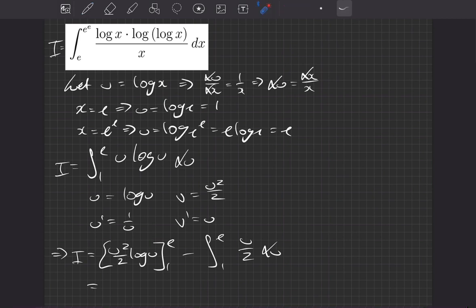So we can plug in the numbers, the limits for our first bit. Log of e is going to be just 1, so this first bit becomes e squared on 2. If we put 1 in there, then we have log of 1, which is equal to 0. So this whole bit goes away for 1. So this entire bracket, all it is, is e squared on 2.